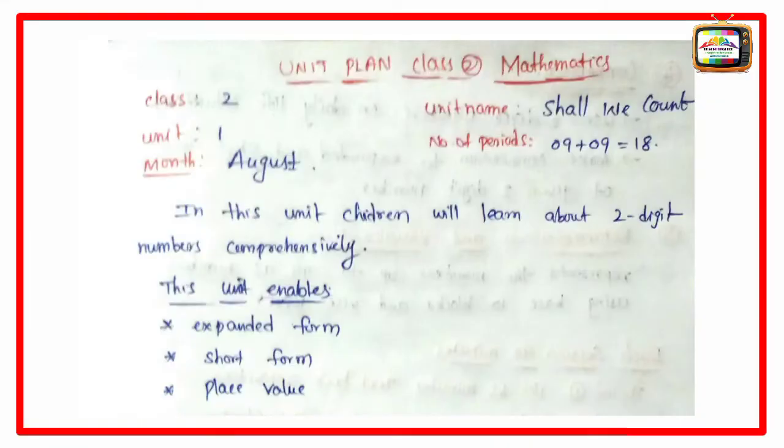Good morning teachers. Here is Manam unit plan Class 2 Mathematics, sorry, model lesson plan. Class 2, Unit 1, Month August, unit name Shall We Count, number of periods 9 plus 1, 9 plus 9 equal to 18.